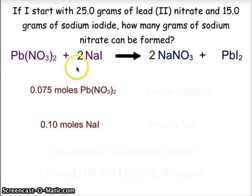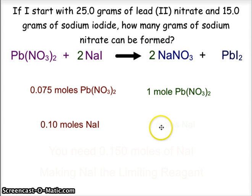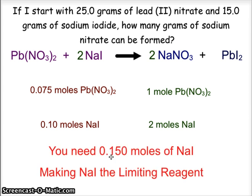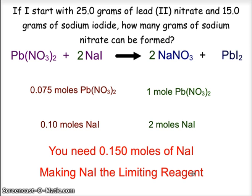The situation sets up like this: from the balanced chemical equation, we know we have one mole of lead nitrate and two moles of sodium iodide. We would need 0.15 moles of sodium iodide to react with the 0.075 moles of lead nitrate. So this makes the sodium iodide the limiting reagent, and this is the one we're going to use for our calculations.